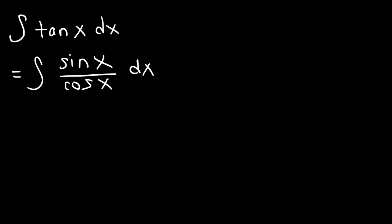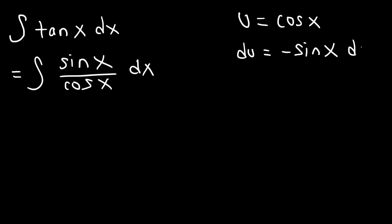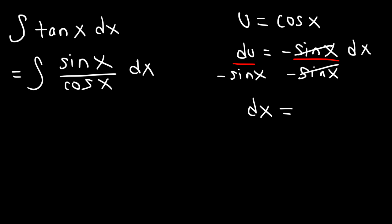To integrate this expression we need to use a technique known as u-substitution. We're going to make u equal to cosine x, and du is going to be the derivative of cosine, which is negative sine x times dx. I like to solve for dx by dividing both sides by negative sine x, so dx equals negative du divided by sine.